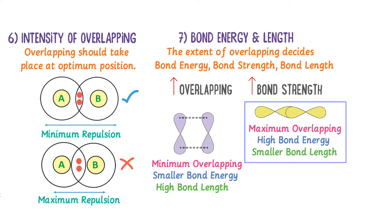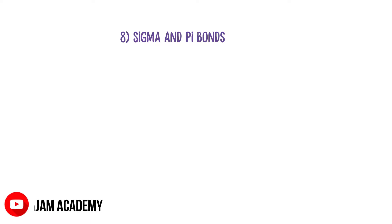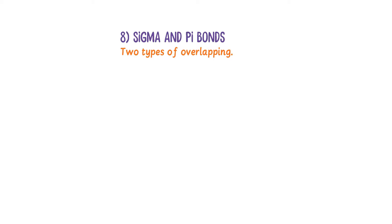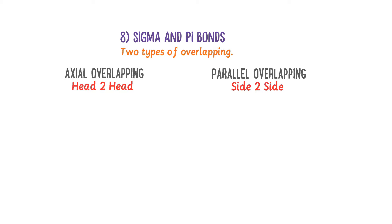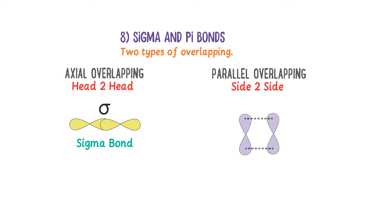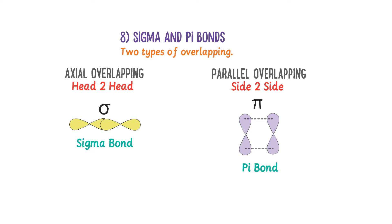The last and eighth point of VBT is sigma and pi bonds. It teaches that there are two types of overlapping between atomic orbitals: axial overlapping, also known as head-to-head overlapping, and parallel overlapping, also known as side-to-side overlapping. When two P orbitals overlap head-to-head, it is called axial overlapping and always forms a sigma bond. When two P orbitals overlap side-to-side, it is called parallel overlapping and always forms a pi bond. Thus, VBT introduces the concept of sigma and pi bonds. In the next lecture, we will learn more about sigma and pi bonds.